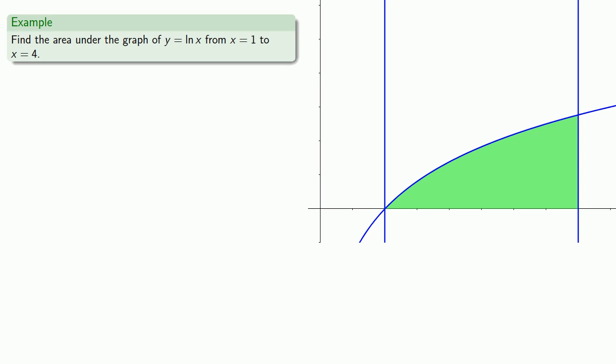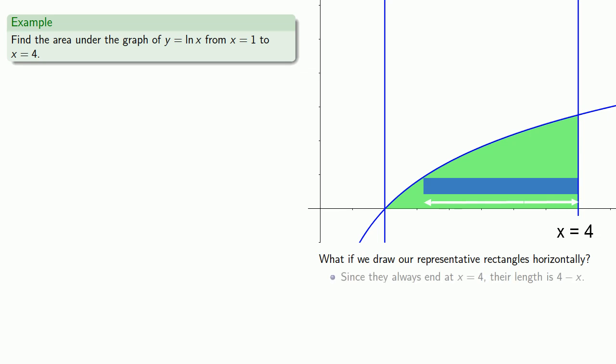So what else can we do? What if we draw our representative rectangles horizontally? Since they always end at x equals 4, their length is 4 minus x. And their width is this tiny portion of the y-axis, dy. And so their area is width times length, 4 minus x, dy. And we're still summing them up from x equals 1 to x equals 4.